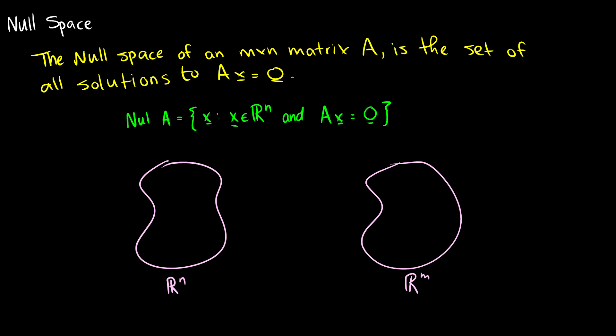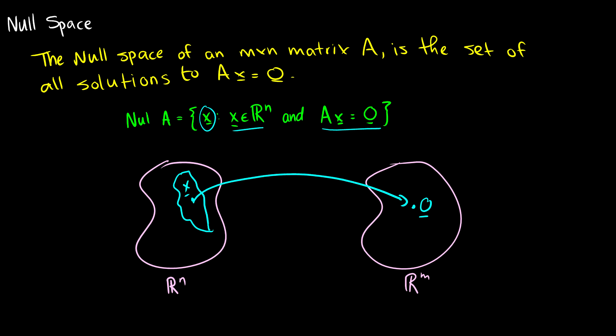The null space of an m by n matrix A is the set of all solutions to Ax equals zero — more precisely, it's the set of all x such that x is in R^n and Ax equals zero. So for instance, if we have zero in R^m, we have this set of solutions in R^n such that they all map to zero. This area here is going to be our null space.